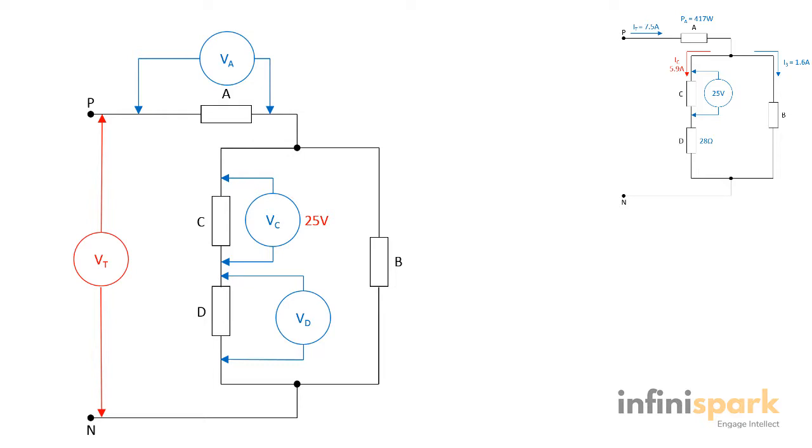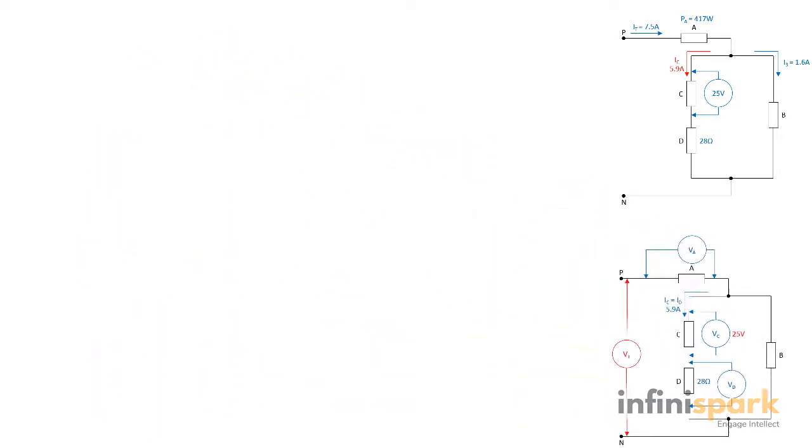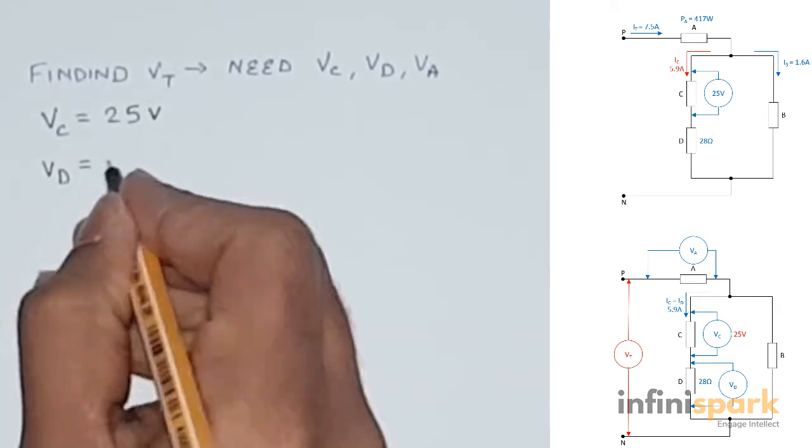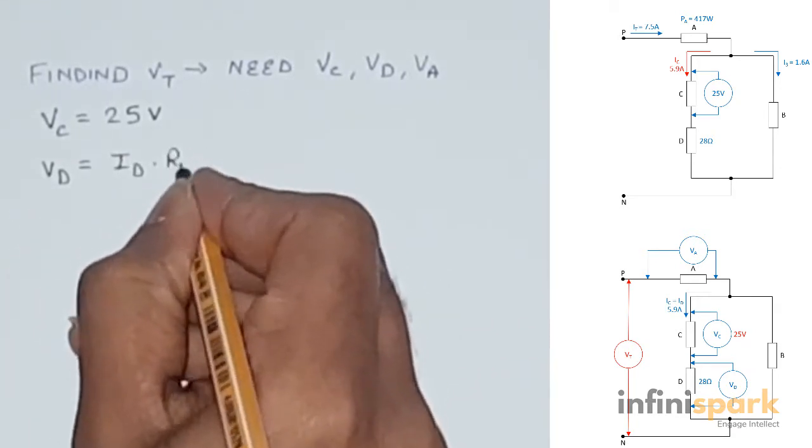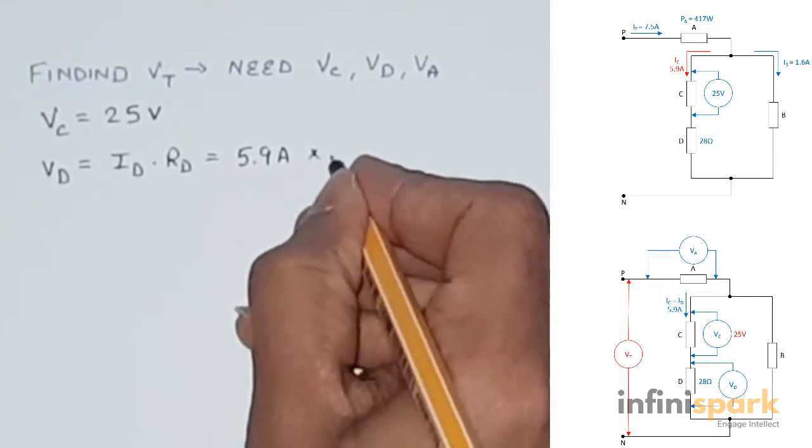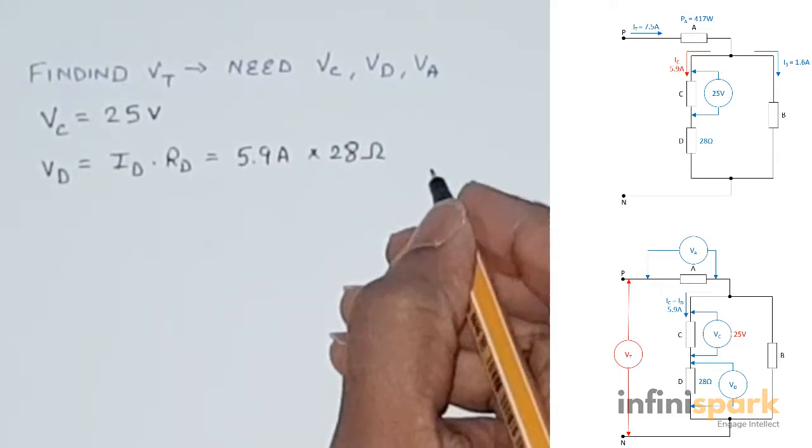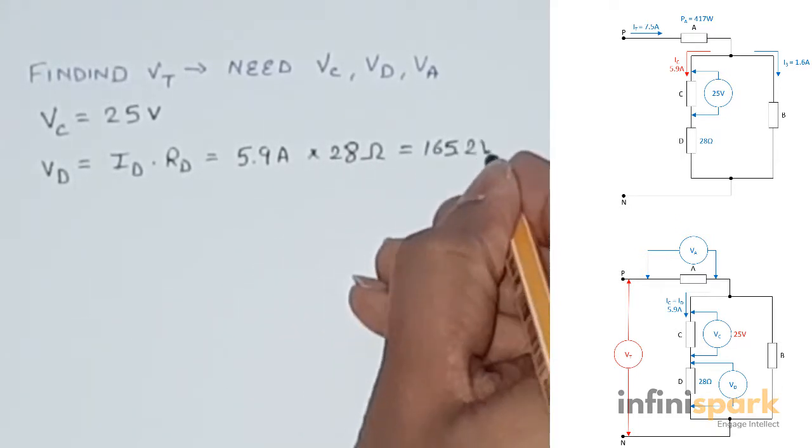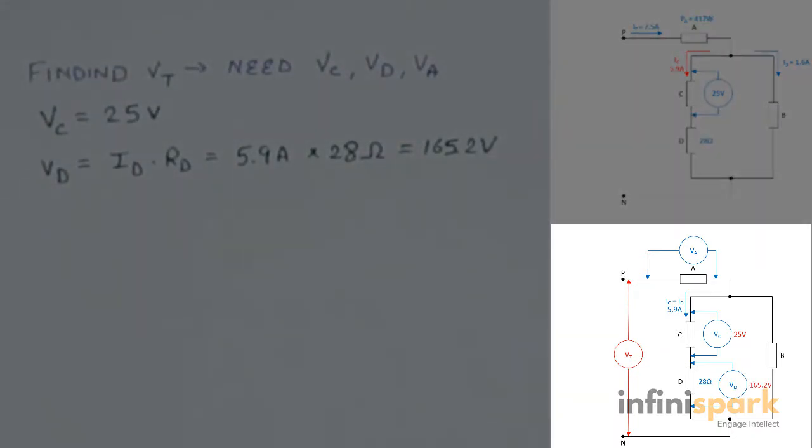To find VD, we need ID, which is same as IC because they are in series, and resistance D. According to Ohm's law, VD will be equal to ID times RD, 5.9 times 28, which will give us 165.2 volts. So the voltage drop across resistor D is 165.2 volts.